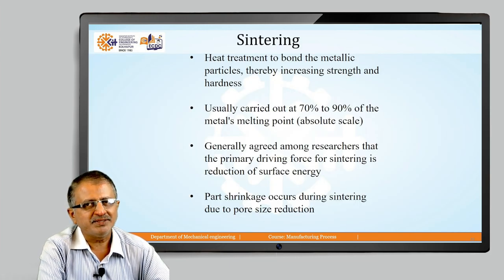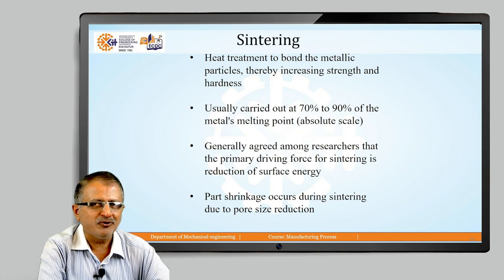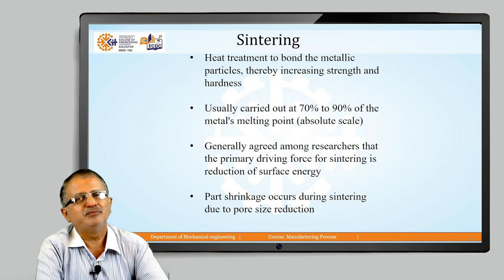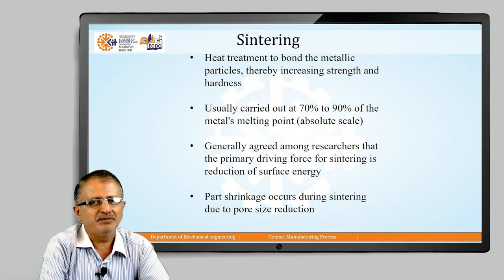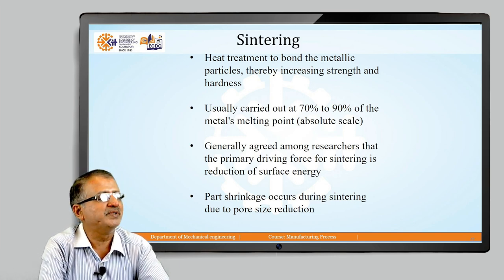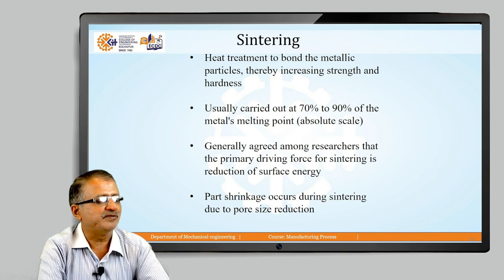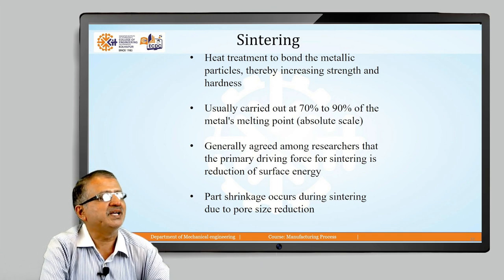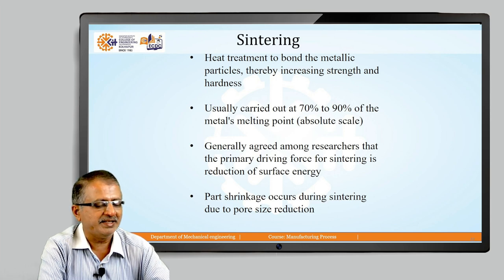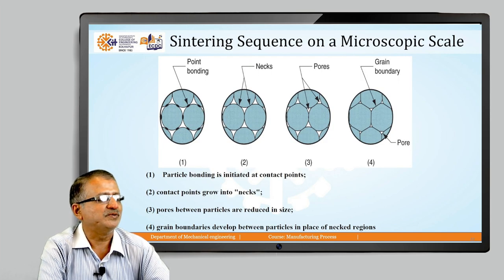The next process is sintering. The green compact is available with good strength and should be heated at a temperature in the range of 80 to 90 percent of the metal's melting point. Sintering is for reduction of surface energy and part shrinkage occurs due to sintering because of pore size reduction. It increases the strength and hardness of the part.